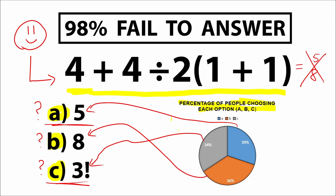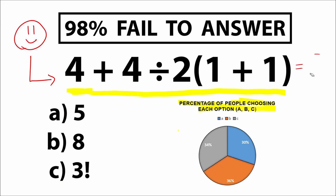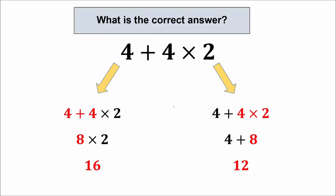Let's forget about the poll for a moment and learn some basic algebra concepts. We're interested in the thing called order of operation. Here's a quick example: we have 4 plus 4 times 2. Why is it important to follow the order of operation?